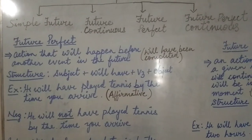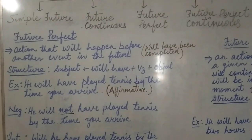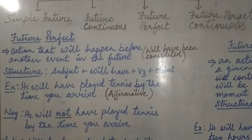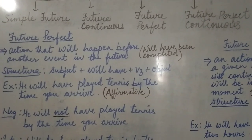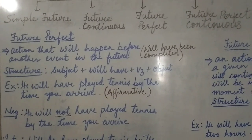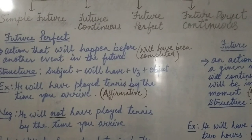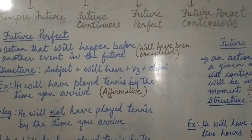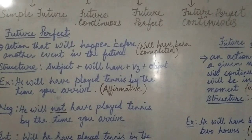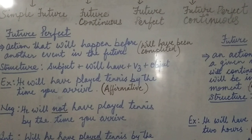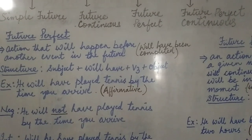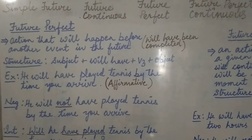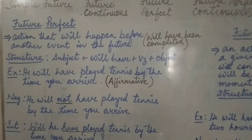Now let's come to the structure of the sentence. The structure of the sentence in future perfect will be: subject plus will have plus V3 plus object. Will have is the auxiliary verb, and V3 is the past participle form of the main verb. Now let's come to the example.